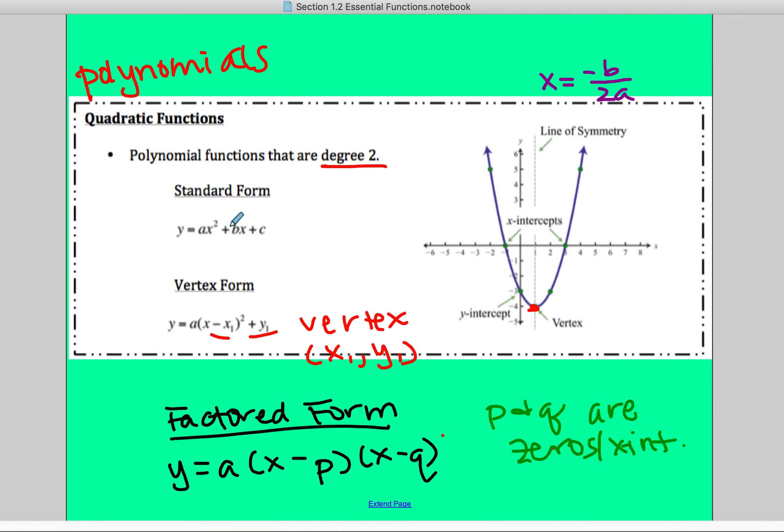You take whatever this number is in front of x, divide it by 2 times your a value. That's how you find your line of symmetry.